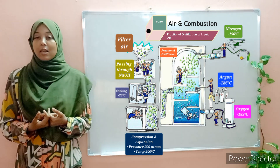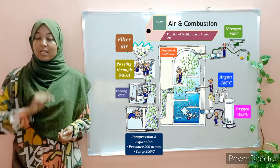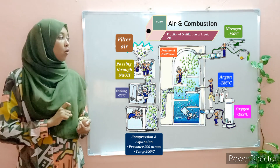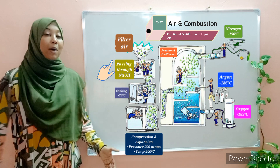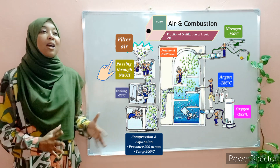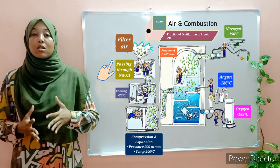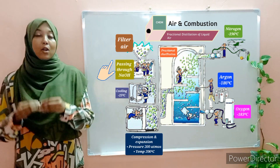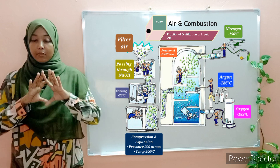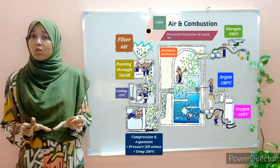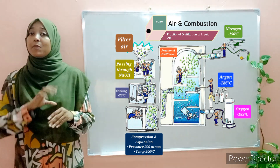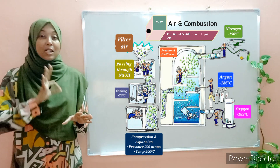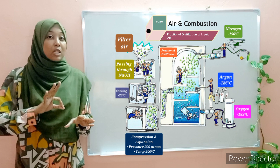The next step is removal of carbon dioxide. This is done by passing the air through a concentrated solution of sodium hydroxide. Sodium hydroxide absorbs any carbon dioxide, so at this point we have managed to eliminate dust particles and carbon dioxide.